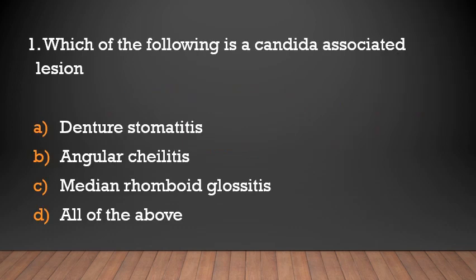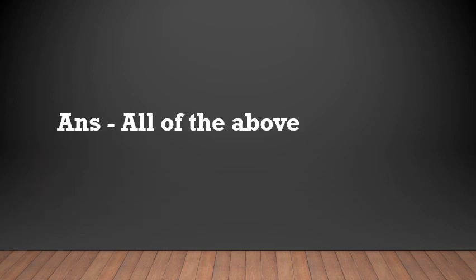Which of the following is a candida-associated lesion? Denture stomatitis, angular cheilitis, median rhomboid glossitis, or all of the above? The answer is all of the above. Candida-associated lesions include denture stomatitis, angular cheilitis, and median rhomboid glossitis.